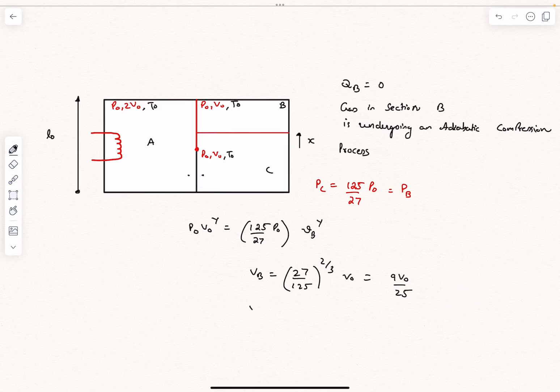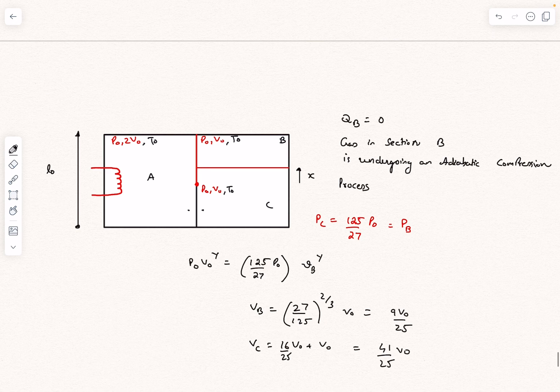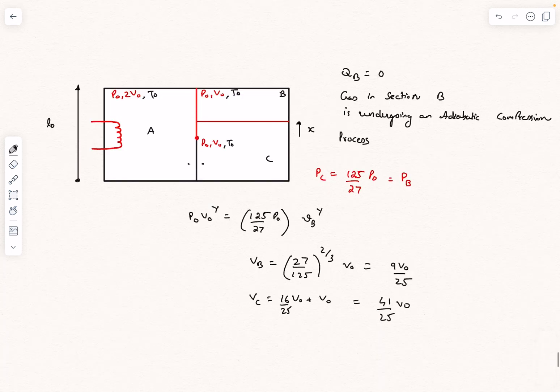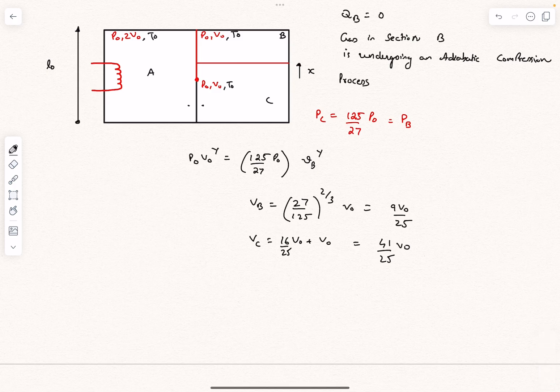The volume of section C is going to be 16 by 25 V₀ plus V₀, which comes out to be 41 divided by 25 V₀. Now in one of the questions we needed the final temperature of section C. As we know the pressure and volume, we can figure that out.